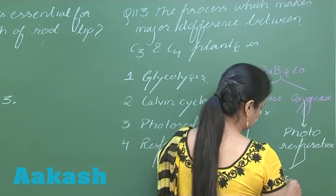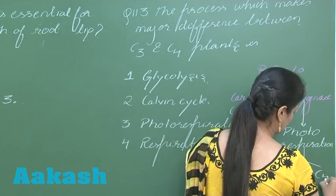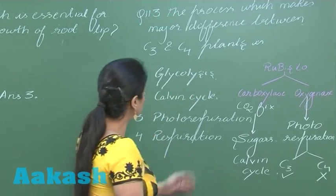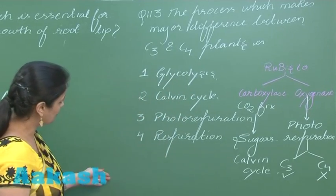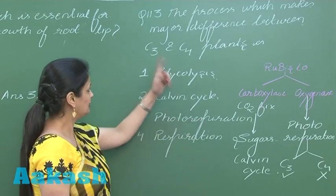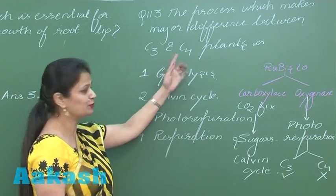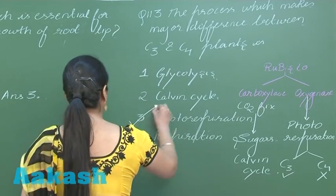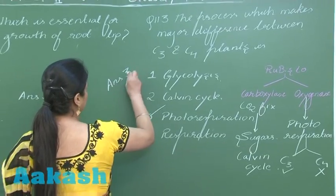Photorespiration is present in C3 plants and absent in C4 plants — that is one key difference. So the right option for this question is option number 3.